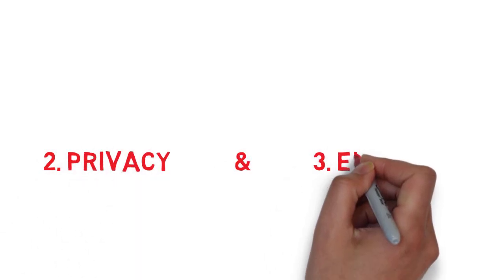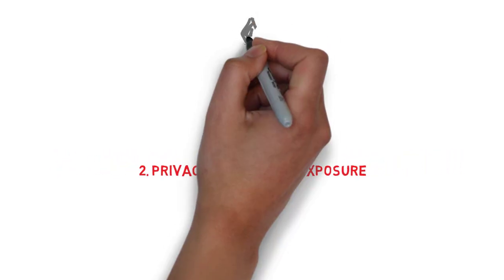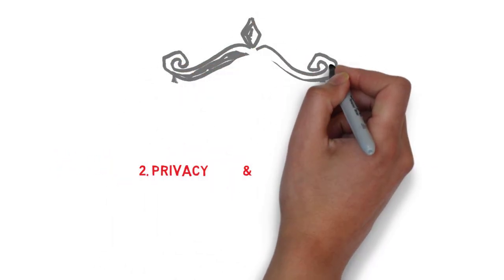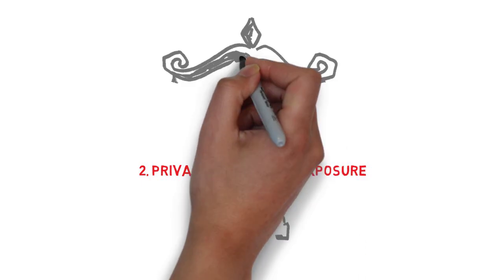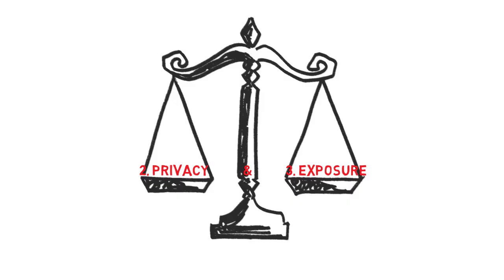The next two principles, privacy and exposure, are related. Ultimately, the purpose of any physical exam is to examine the body. Therefore, some level of exposure is necessary. There can be a fine balance, however, between privacy and exposure. Expose the specific area that you are examining and limit exposure to other areas.